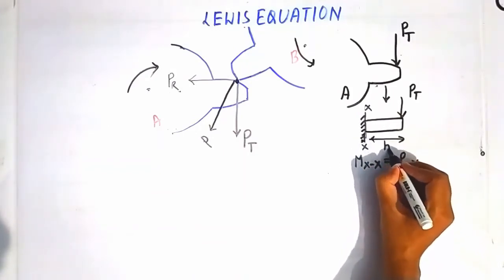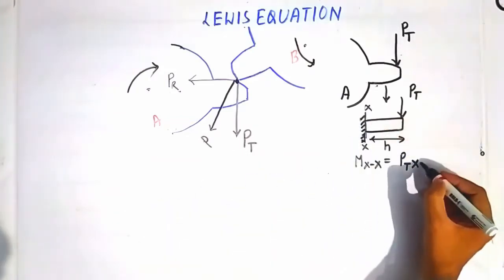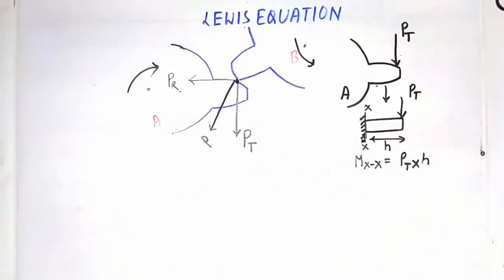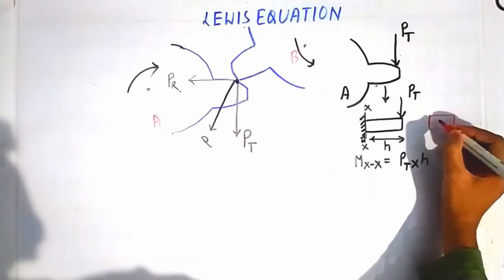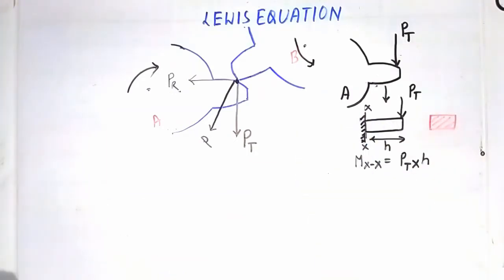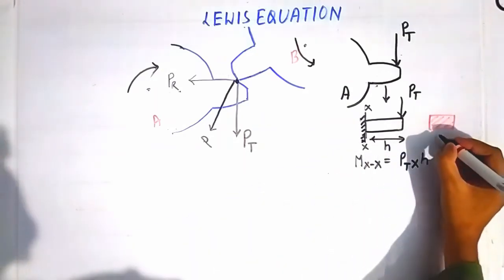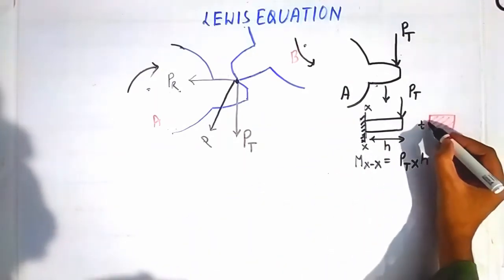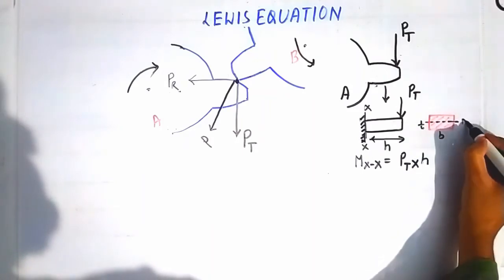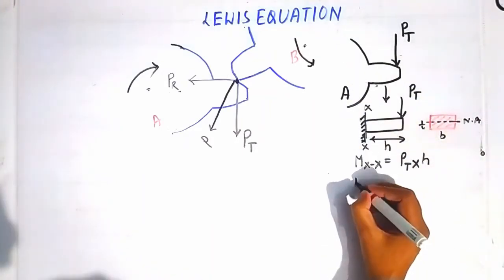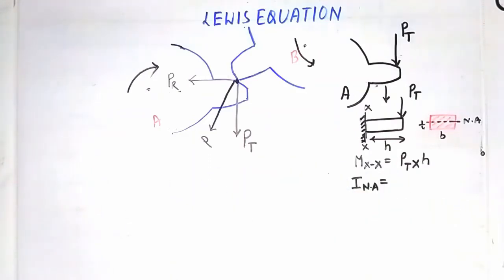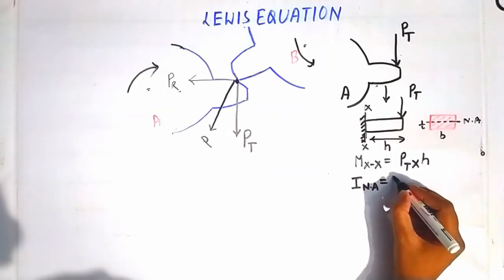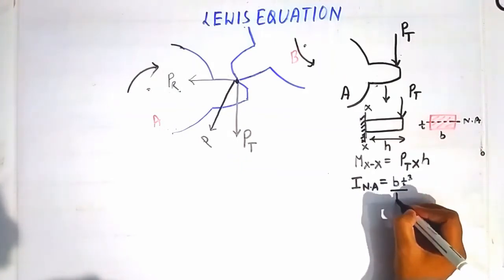The moment at XX is equal to PT multiplied by H, where H is the length of the tooth. Now, suppose the cross section of this tooth is considered to be uniform with dimensions B by T. The moment of area about the neutral axis can be calculated as BT³/12.